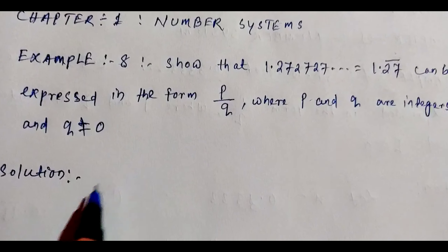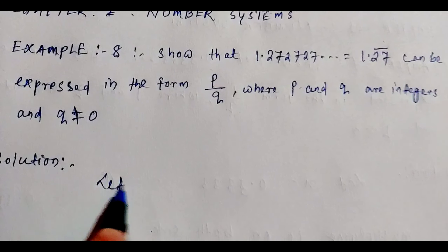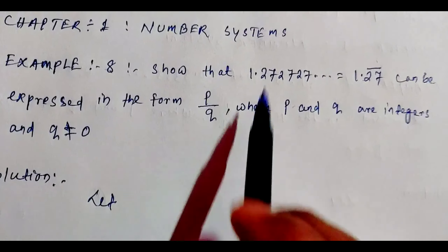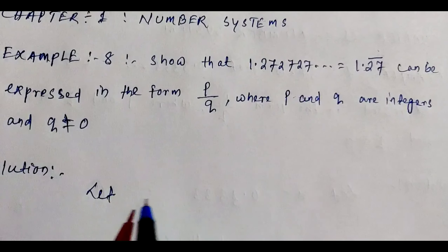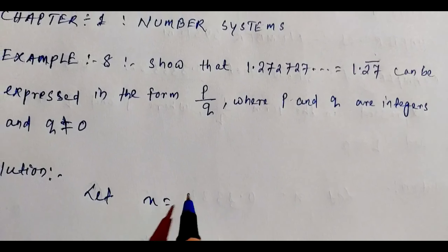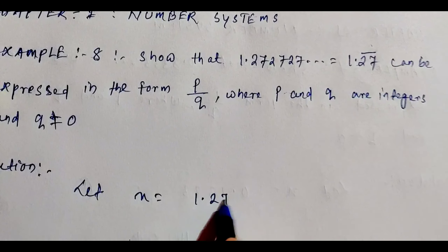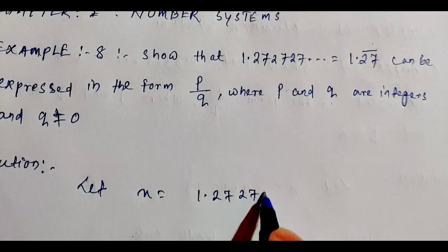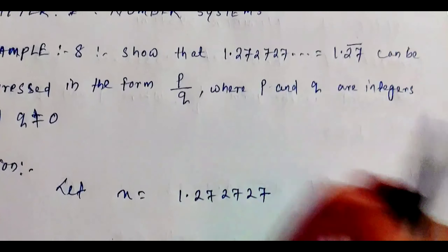We will solve it. Let x equal to 1.272727, repeating. The denominator should not be zero.